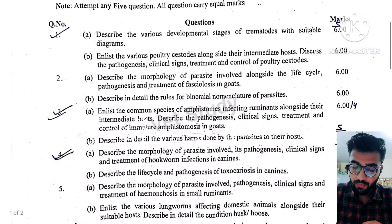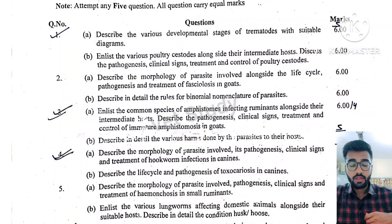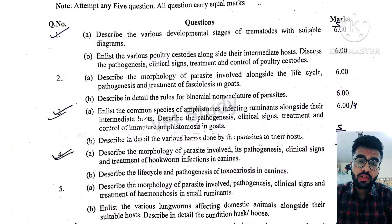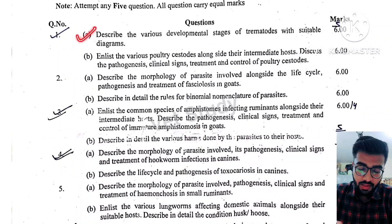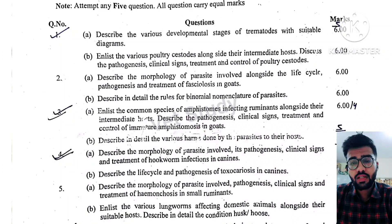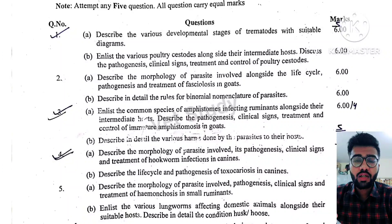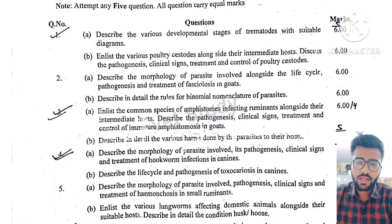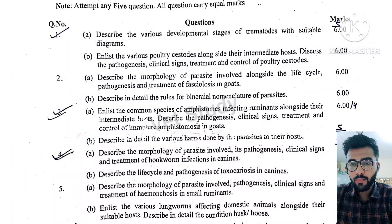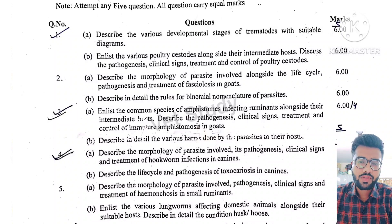The first question was: the developmental stages of a trematode with a suitable diagram. You will have to describe the different stages of trematode and draw their diagrams — Radia, Cercaria, Miracidium. This is an important question that has also been asked in six-month exams.